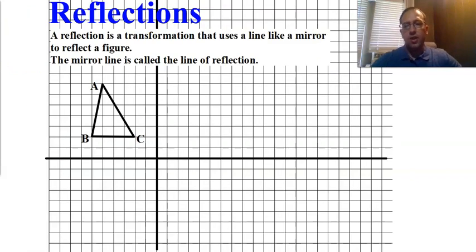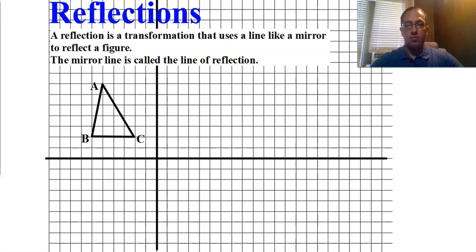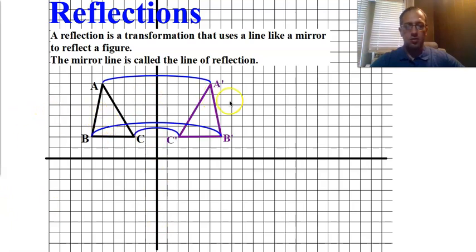A reflection is a transformation that uses a line like a mirror to reflect the figure. This mirror line is called the line of reflection. For example, I have triangle ABC here. I'm going to reflect it over the y-axis, and so it just goes like that. You see it just flips over the y-axis — in reflections, a lot of times they're called flips.